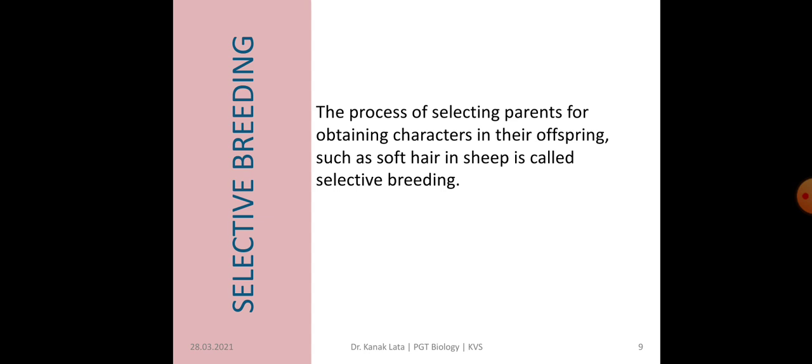Now let us see what selective breeding is. Selective breeding is a process of selecting parents for obtaining certain characters in their offspring. Male and female parents are selected and cross-bred so that their offspring have certain good characters, such as soft hair in sheep. This is called selective breeding.